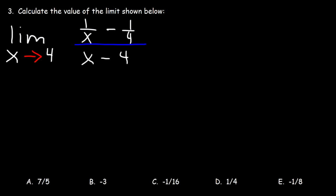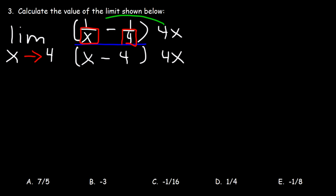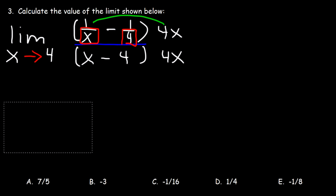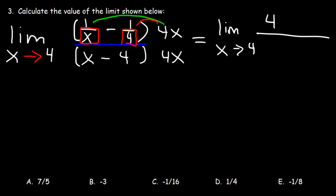Number 3, calculate the value of the limit shown below. So whenever you have a complex fraction, what you want to do is multiply the top and the bottom by the common denominator, the common denominator being 4x. So on the top, you want to distribute 4x times 1 over x is 4. 4x is the same as 4x over 1, and you can see the x variables will cancel, leaving behind 4. So therefore what we now have is the limit as x approaches 4, and on top we have positive 4. Now if we multiply 4x by 1 over 4, you can see that the 4s will cancel, leaving behind x. And there's a negative sign in front, so it's going to be minus x. And on the bottom, we're just going to rewrite x minus 4 and 4 minus x.